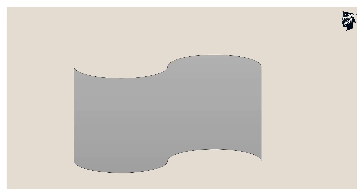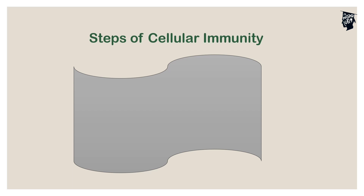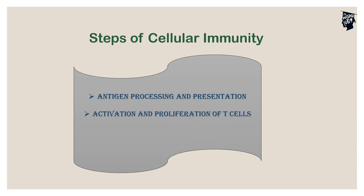So let's discuss the steps of cell-mediated immunity. Cell-mediated immunity mainly deals with intracellular pathogens. The steps are: first, antigen processing and presentation; second, activation and proliferation of T-cells; and third, elimination of the invader.